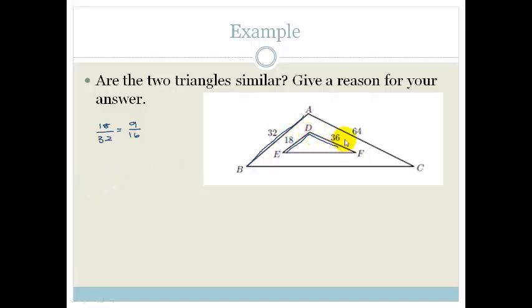If I do 36 over 64, I get 36 over 64, and I divide both of those by 4. That gives me 9, and 4 goes into 16... that is 9 over 16.